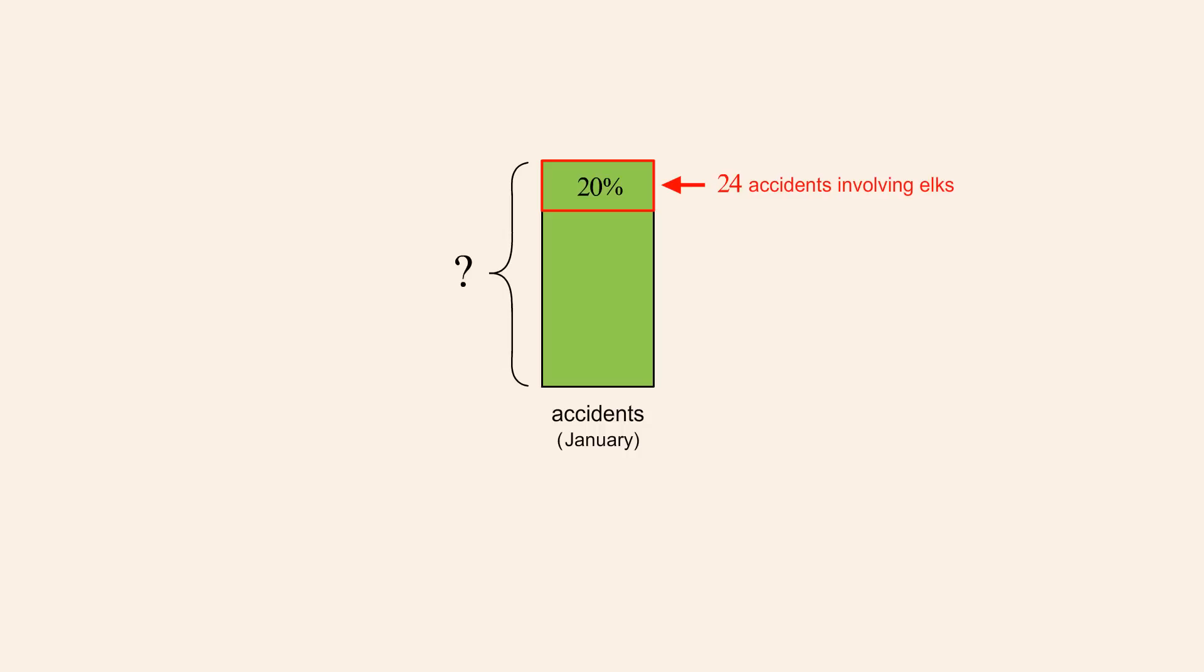To solve this problem, let's let x represent the total number of road accidents in January. We know that the 24 accidents involving elks were 20% of this number. And since the decimal equivalent of 20% is 0.2, we can write this quantity as 0.2x. Since 0.2x is the number of accidents involving elks, we can now create the equation 0.2x is equal to 24.